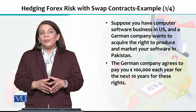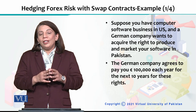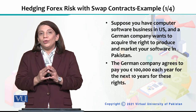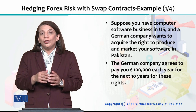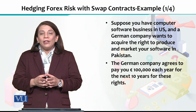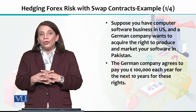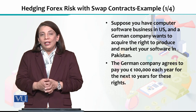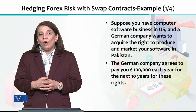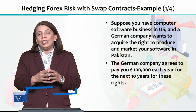In this section, I will explain how hedging can take place against foreign exchange risk using swap contracts, by an example. We are assuming a situation in which there is a US-based company which deals with computers, and there is another company which is a German company, and she wants to sell some software in Pakistan.